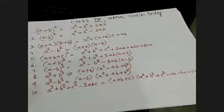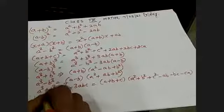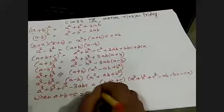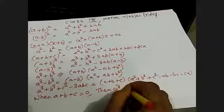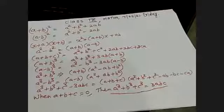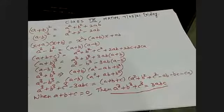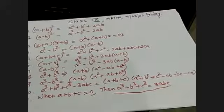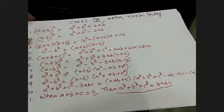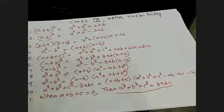And the next identity is when A plus B plus C equals zero, then A cube plus B cube plus C cube is equal to 3ABC. These are the total algebraic identities. Today I am taking some additional questions not in your NCERT book — extra questions. Please note down all the identities and learn them because they are very useful to solve algebraic expressions.